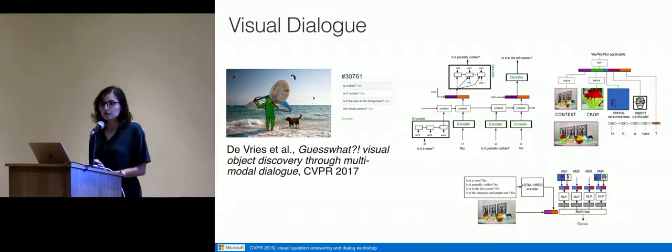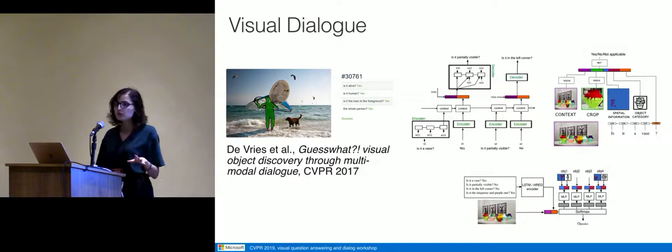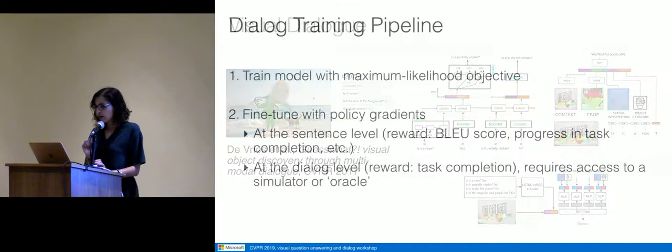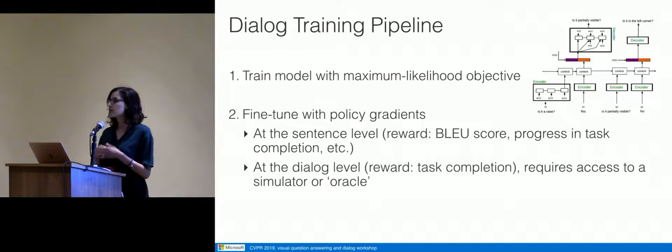The work I'm going to present today is really about dialogue modeling itself. It was inspired by experiments we did in visual dialogue, but it's purely about dialogue modeling — not in the visual setting, but it applies everywhere including the visual setting. If you look at training those dialogue models, the pipeline most of the time starts with an encoder-decoder model trained with a maximum likelihood objective to imitate what's in the training data.